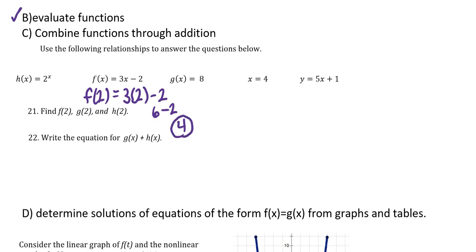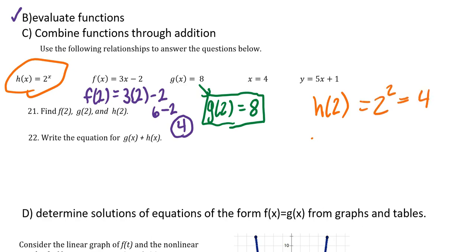To find g of 2, I do the same thing. There is no x to replace for the g function, so no matter what x is, g is always 8. So g of 2 equals 8. And then for h of 2, I'm taking the h function 2 to the x. I'm doing 2 to the 2, which is 4. So f of 2 and h of 2 are both 4, but for very different reasons.